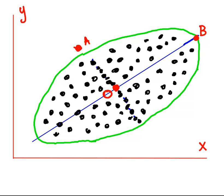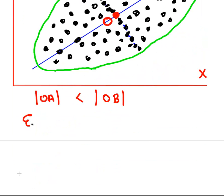So essentially, what we're going to look at here is, if you've done coordinate geometry in school, you might think: well, the distance from O to A is pretty short, and it would be less than the distance from O to B. Now, that's what we might have learned in school — just the distances. These would be called Euclidean distances, or that's what we would properly refer to that as.